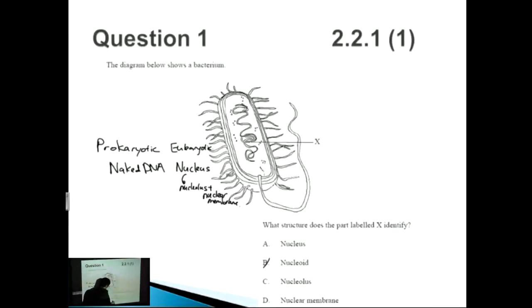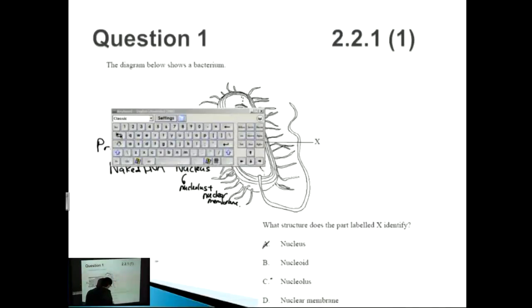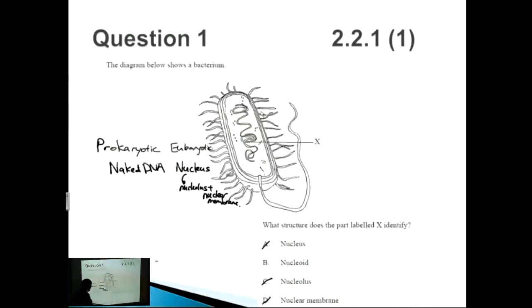Therefore you can get rid of A, C, and D, with the correct answer being B. So it's a nucleoid or naked DNA.